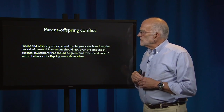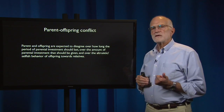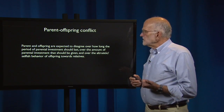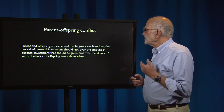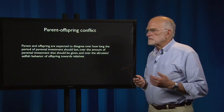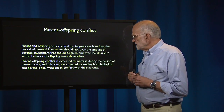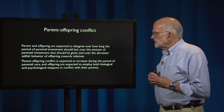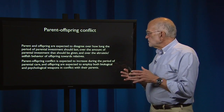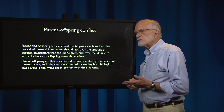Parent and offspring are expected to disagree over how long the period of parental investment should be, over the amount of parental investment that should be given, and over the altruistic or selfish behavior of offspring towards relatives. Parent-offspring conflict is expected to increase during the period of parental care, and offspring are expected to employ both biological and psychological weapons in conflict with their parents.